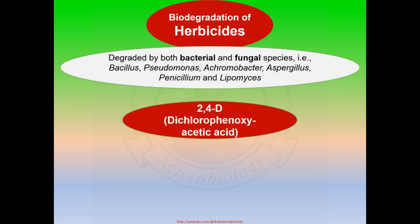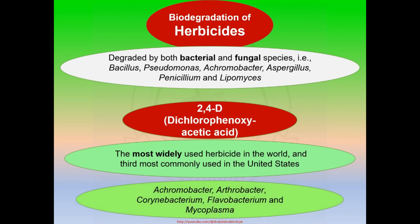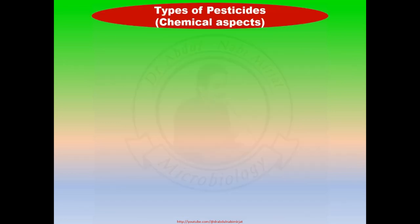2,4-D (dichlorophenoxyacetic acid) is the most widely used herbicide in the world and the third most commonly used in the United States. It is an example of a synthetic auxin plant hormone. Many bacterial species are involved in metabolizing 2,4-D, such as Achromobacter, Arthrobacter, Corynebacterium, Flavobacterium, and Mycoplasma species.